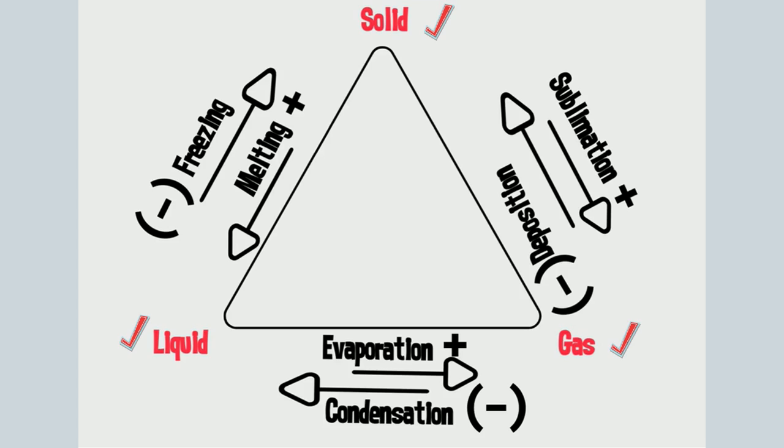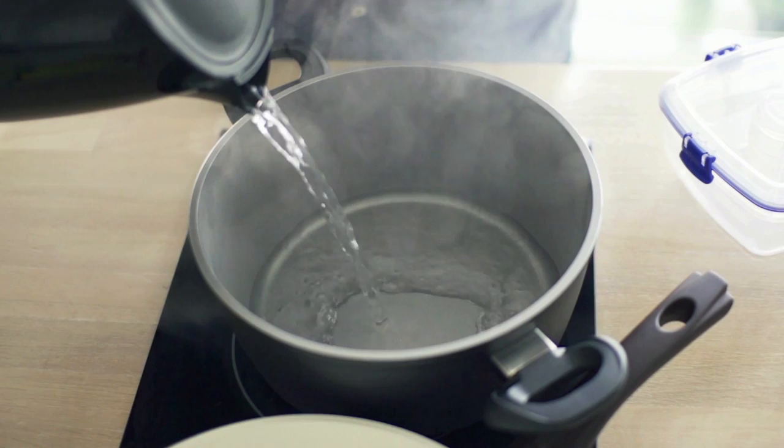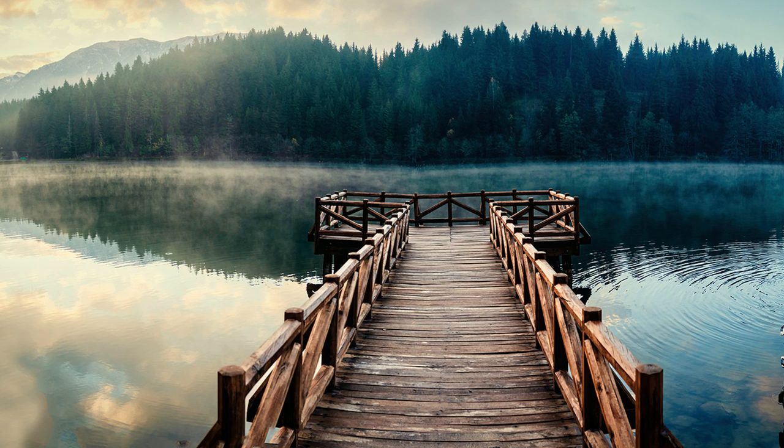Evaporation happens when a liquid is heated. For example, as the sun heats up this lake, the water moves into the air as a gas called water vapor. This is an example of evaporation.